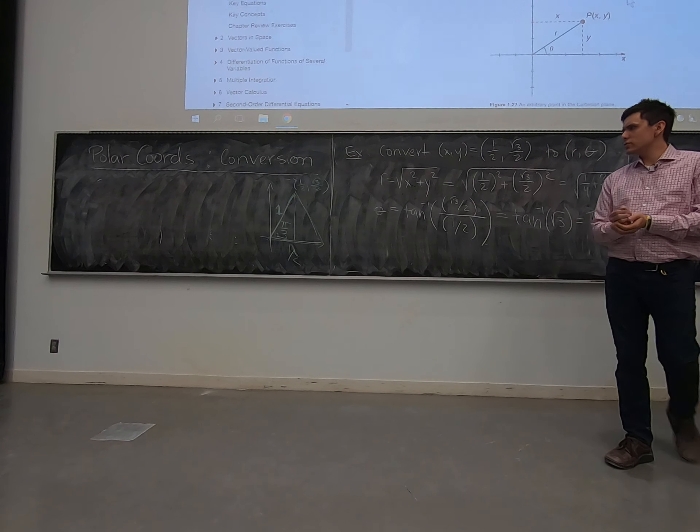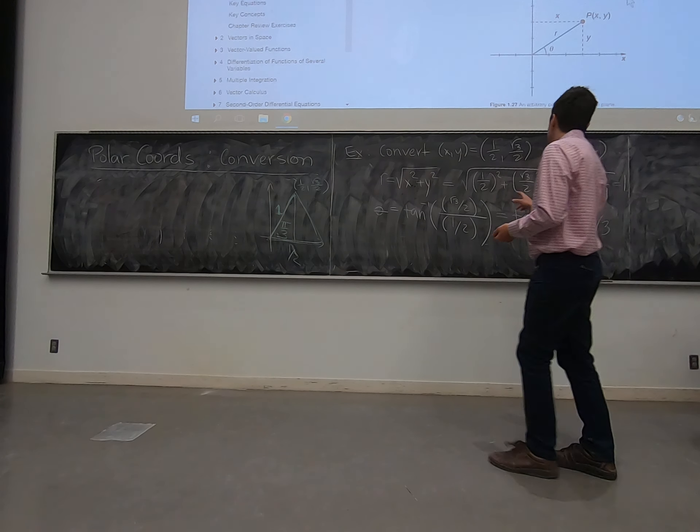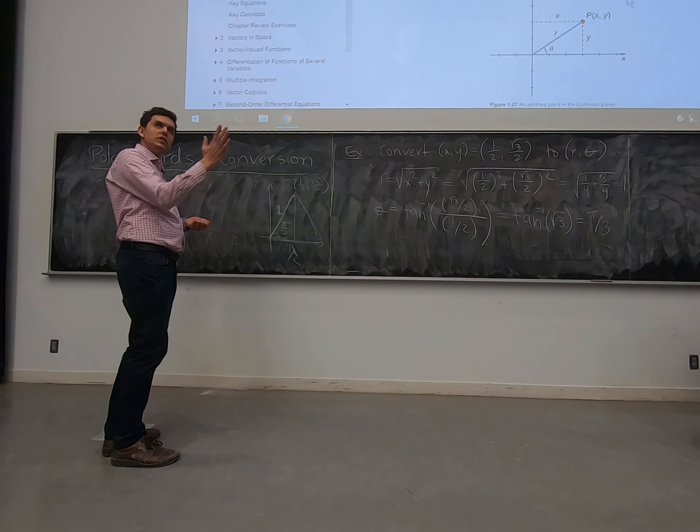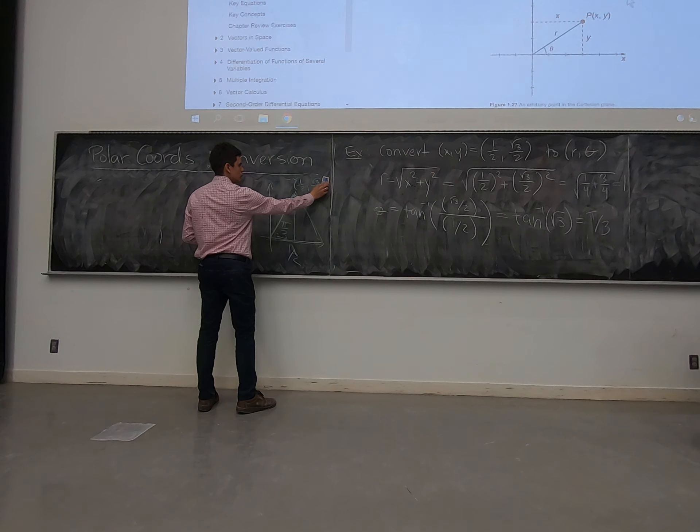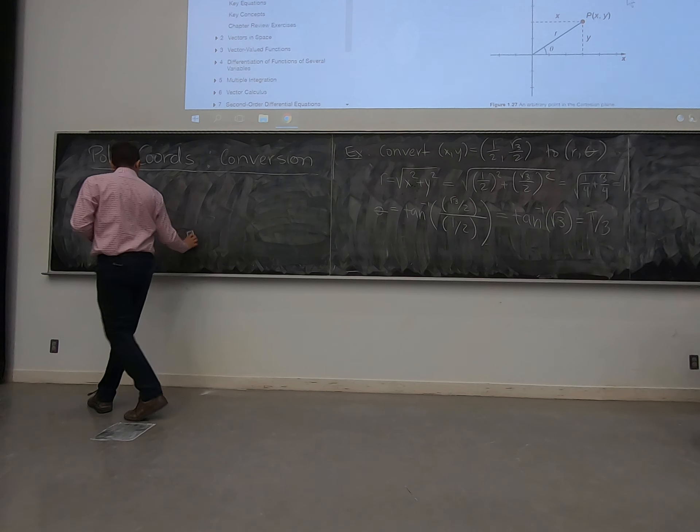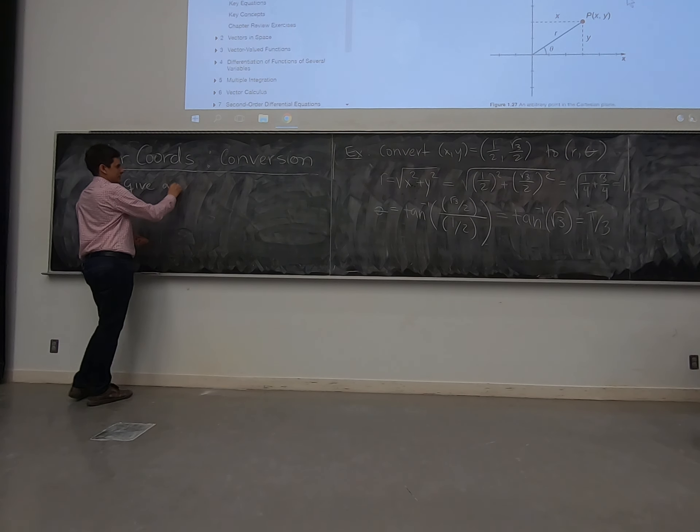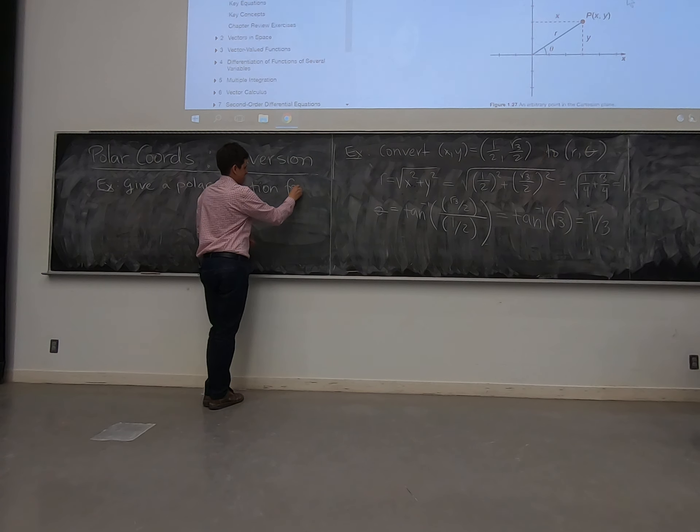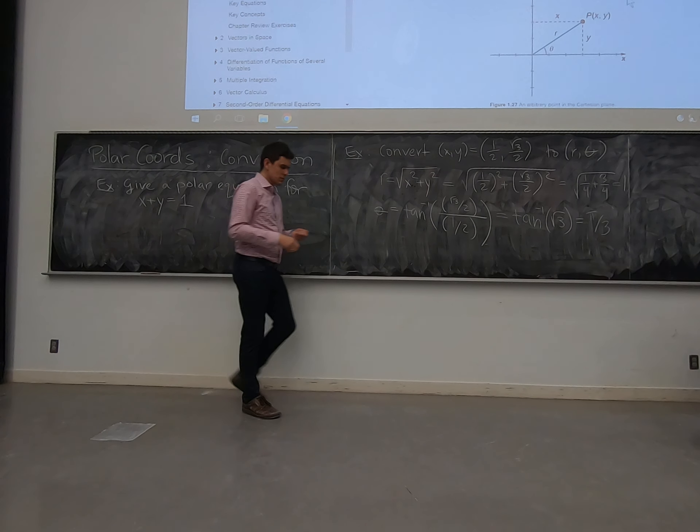I want to talk about how to take whole equations now. We've been talking about points, and now we're going to talk about writing things from Cartesian into polar.